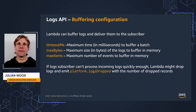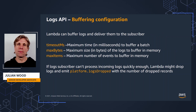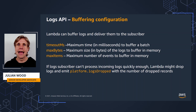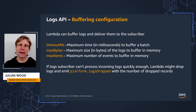Lambda can buffer logs and deliver them to the subscriber. You can optionally configure that as part of the subscription request. Log subscriptions do consume memory resources because each subscription opens a new memory buffer to store the logs, and this memory buffer counts towards overall function memory consumption. You can select the maximum time to buffer a batch, the maximum size of the logs to buffer, and the number of events to buffer in memory. If the logs extension cannot process incoming logs quickly enough, Lambda might have to drop logs to keep within the memory allocation. Lambda adds a Platform.logsDropped record with the number of dropped records.